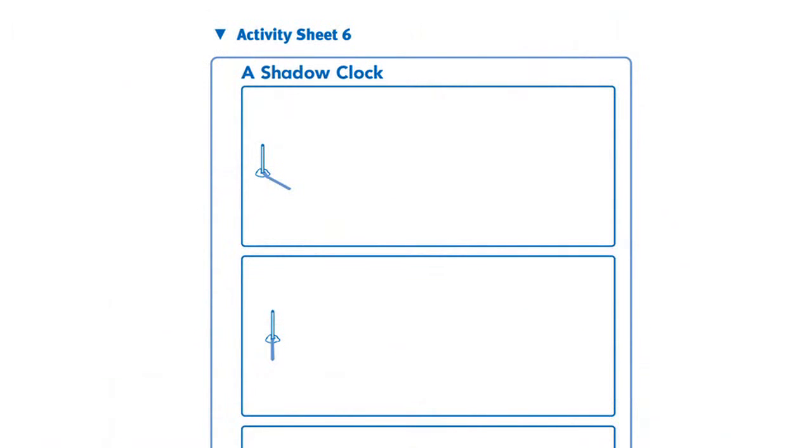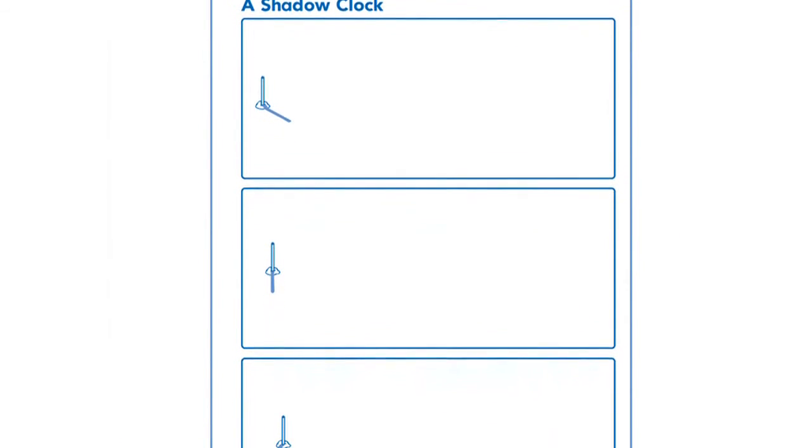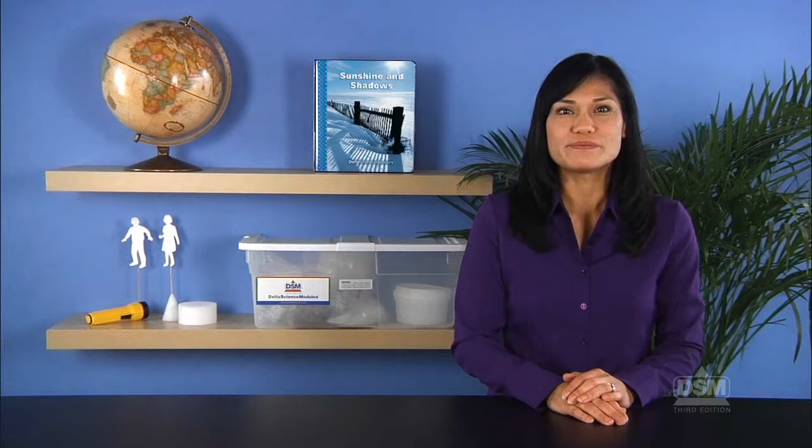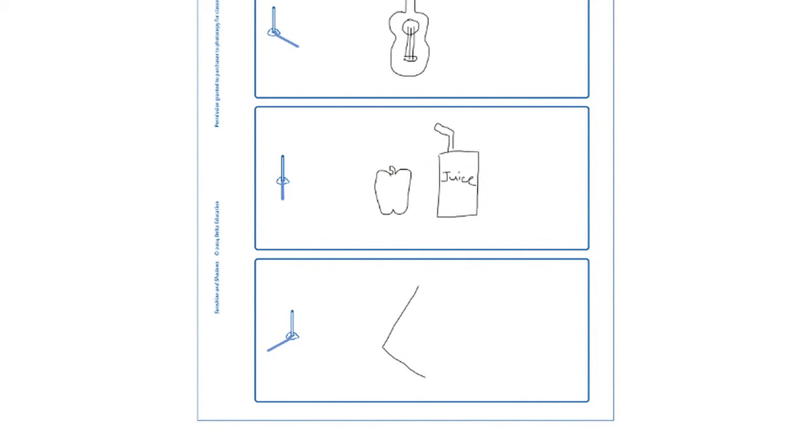Finally, give each student a copy of Activity Sheet 6. One sundial shows a morning time, one shows midday, and the third shows an afternoon. Have them tell the time by drawing a picture of something they do or an object they use during the time shown by each sundial.